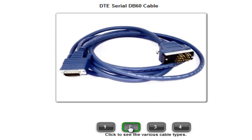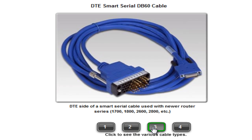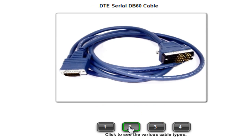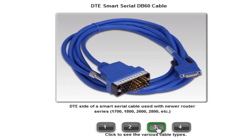Newer routers support the smart serial interface that allows for more data to be forwarded. The serial end of the smart serial cable is a 26-pin connector, much smaller than the DB60 connector used with a 5-in-1 serial port. These transition cables support the same 5 serial standards and are available in either DTE or DCE configuration. For a thorough explanation of DTE and DCE, see Labs 1.5.1, Cabling and Network and Basic Router Configuration. These cable designations are only important when configuring lab equipment to simulate a real-world environment; in a production setting, the cable type is determined by the WAN services you are using.